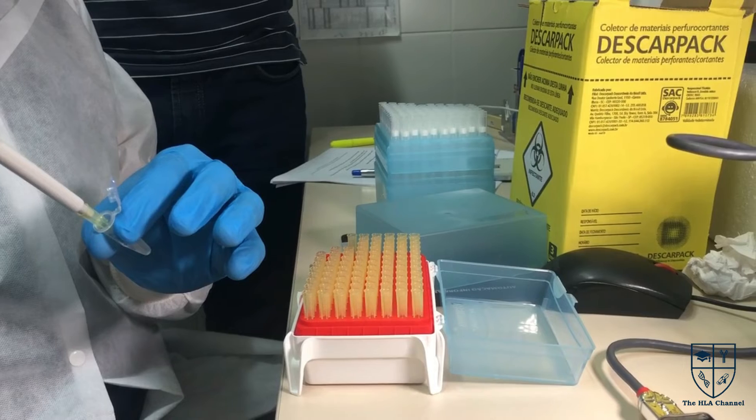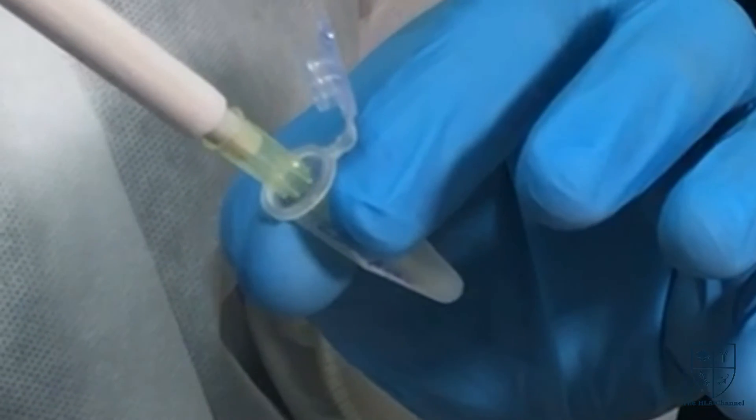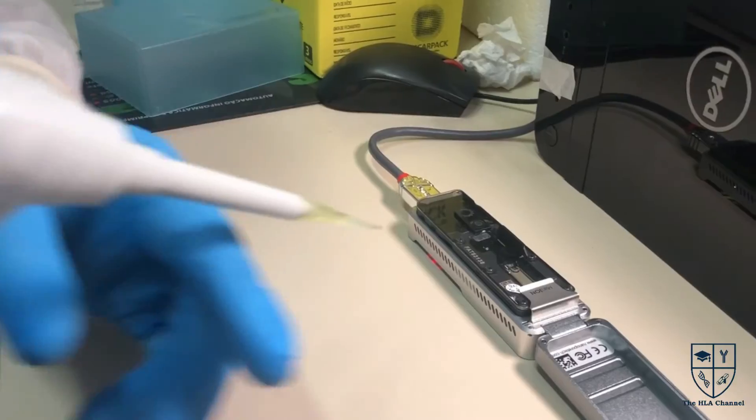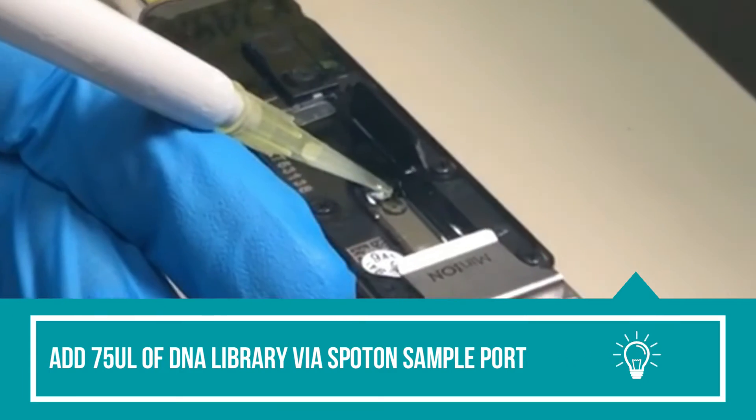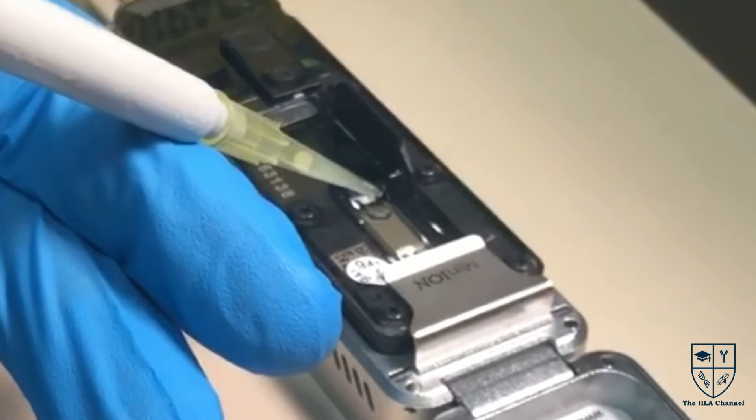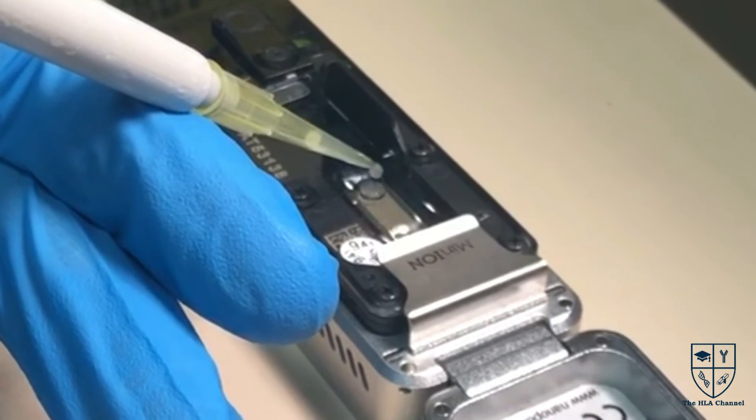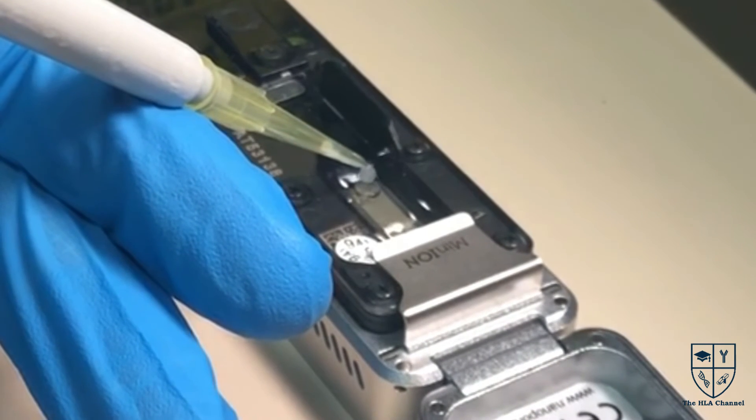Mix the prepared library gently by pipetting up and down just prior to loading. Add the 75 microliters of the library to the flow cell via the spot-on sample port in a drop-wise fashion, drop by drop. Attention! Do not allow the tip to touch the spot-on port. Ensure each drop flows into the port before adding the next.